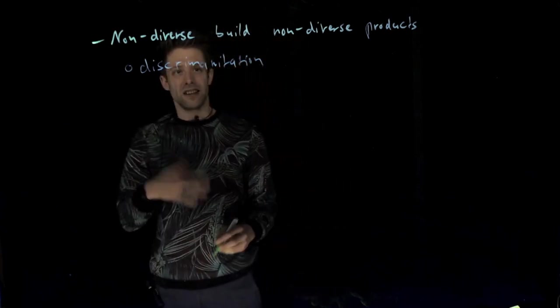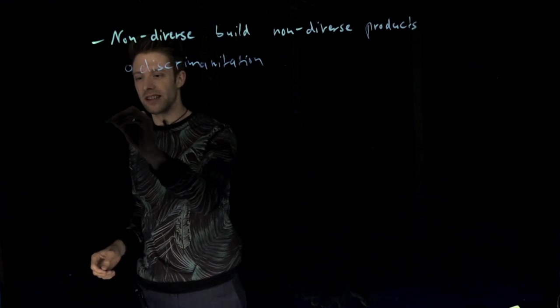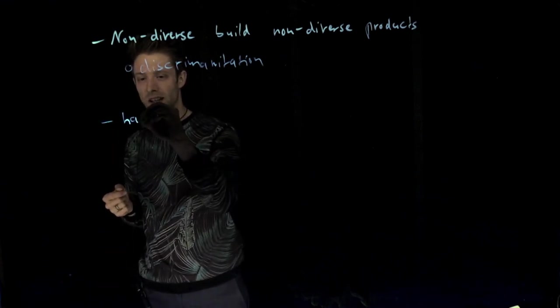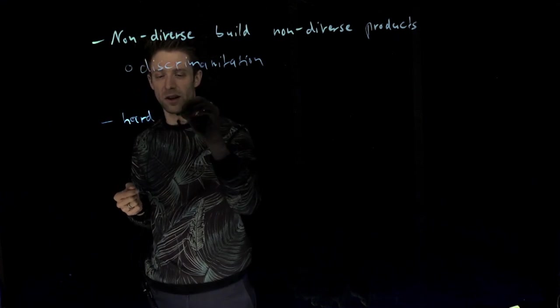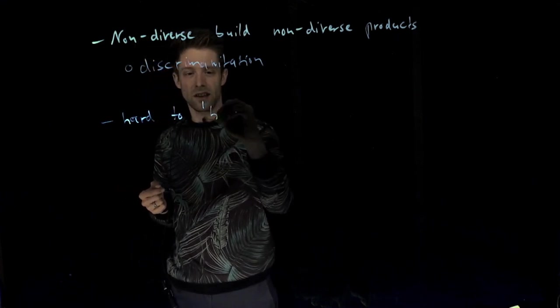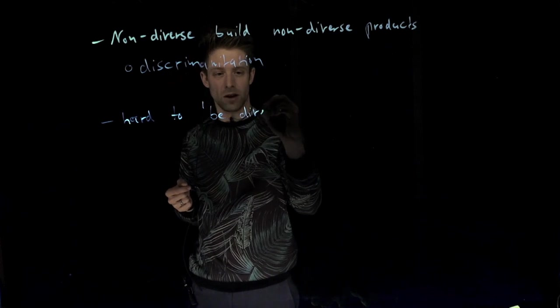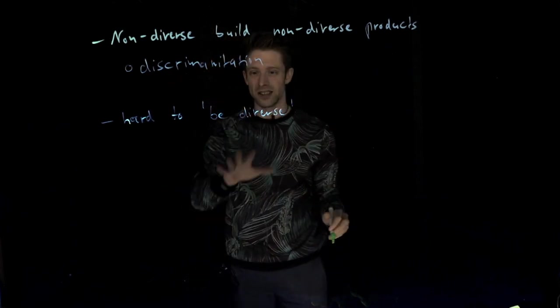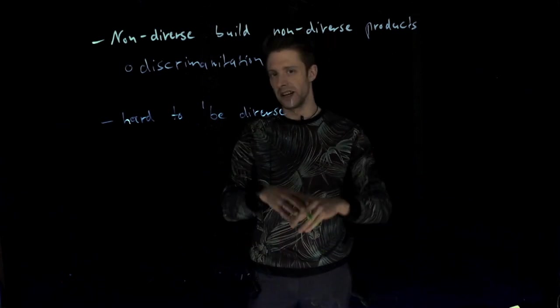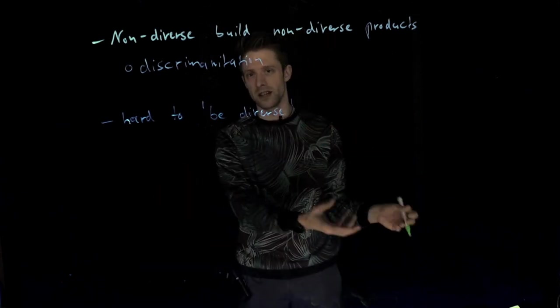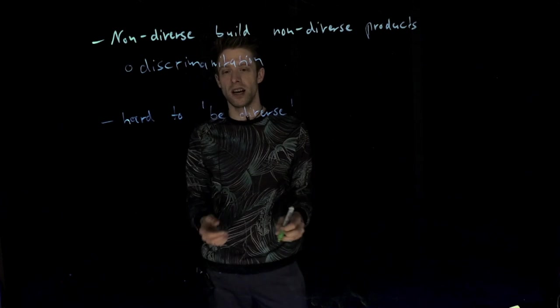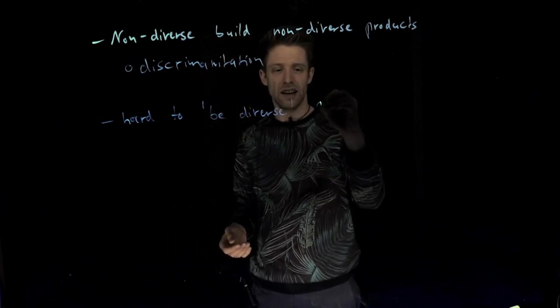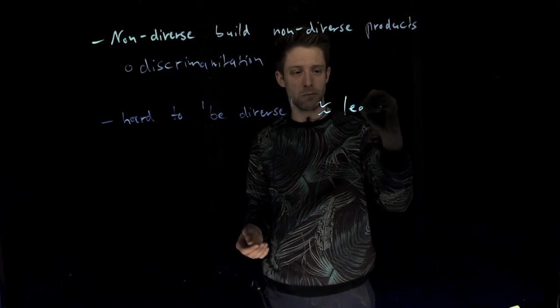But then the other challenge that we are facing, the other consequence, is that it's actually really hard to get diverse, to attract diverse talent. So hard to be diverse as a company. There are a lot of companies, there are a lot of universities that try to be very diverse in their hiring, attract women, attract minorities, attract different age groups, but it doesn't quite work. And this is also sometimes known as the so-called leaky pipeline.